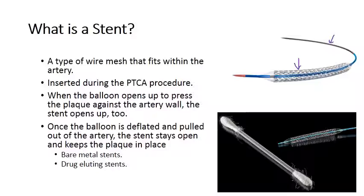There are two types of stents: bare metal stents and drug eluting stents, and these are the stents used in coronary care. There are many different types of stents for other parts of the body — ureteral stents and renal stents — but for the purpose of this we're going to talk about coronary stents, which are used to treat blood vessels in the heart.